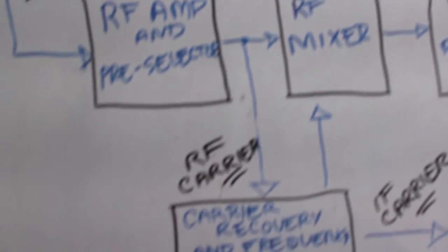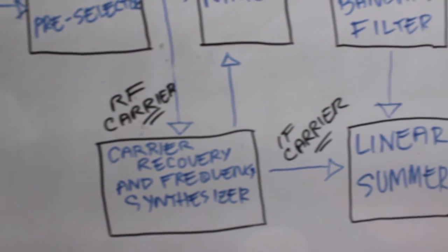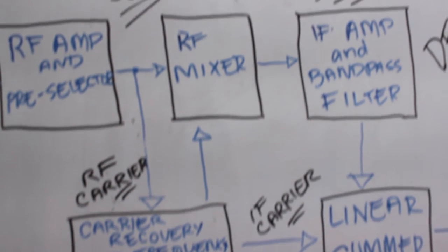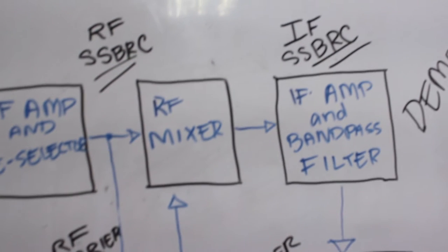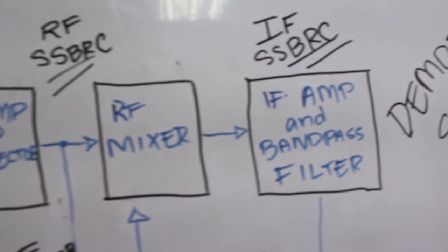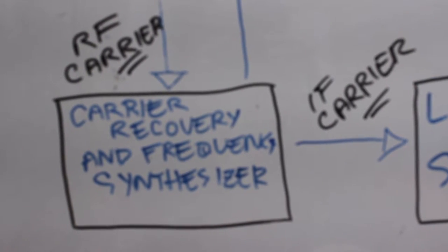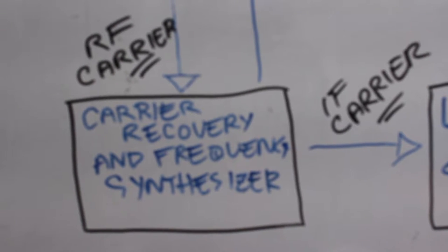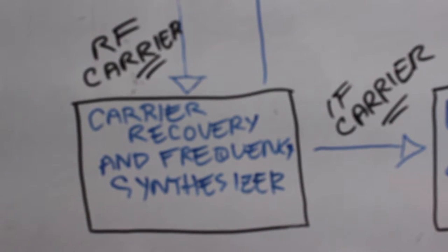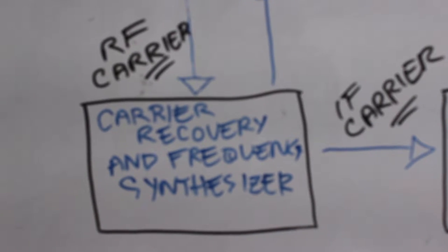A portion of the RF carrier is input to the carrier recovery and frequency synthesizer. This signal is input to the RF mixer which down converts the RF frequencies to a common intermediate frequency. This section is a local oscillator which produces its own frequency. This frequency is used to tune the frequency of the output signal. This process is called heterodyning.